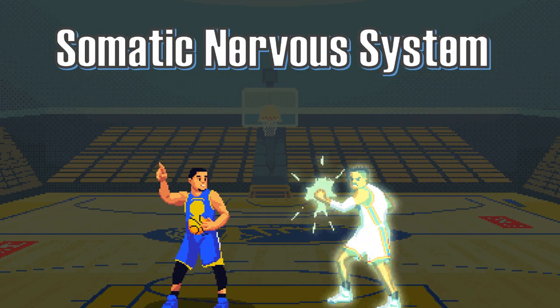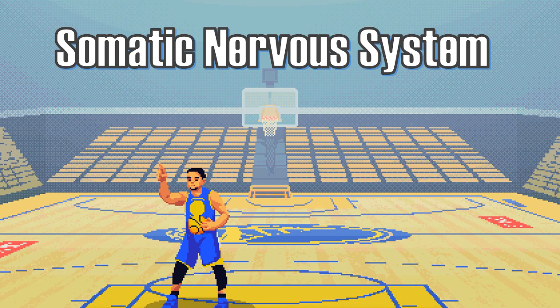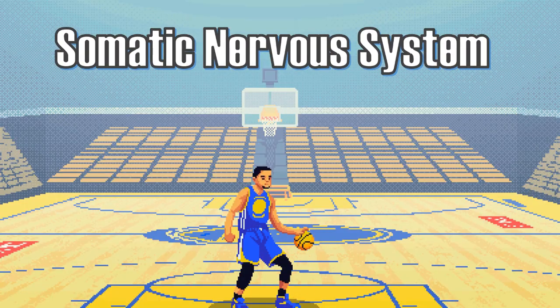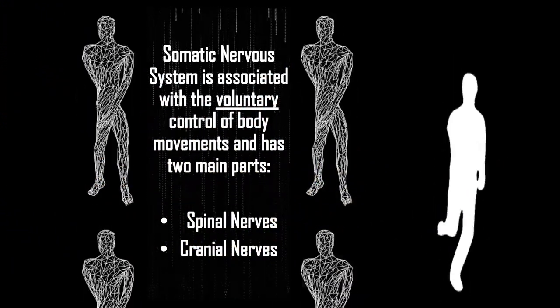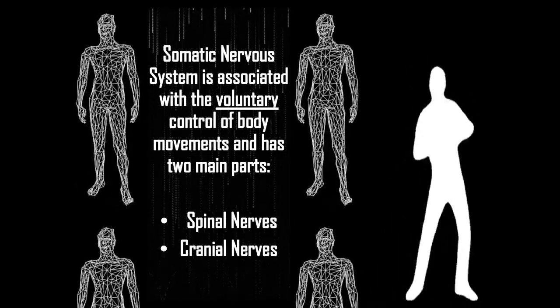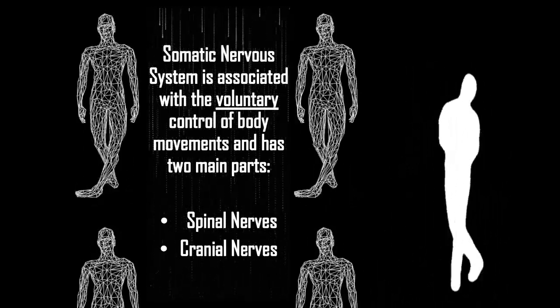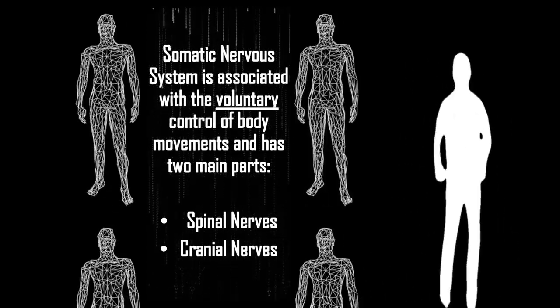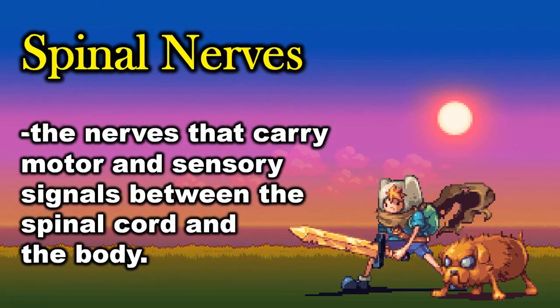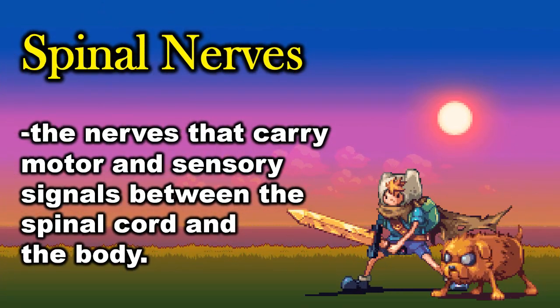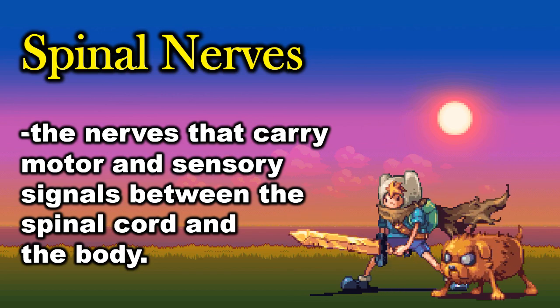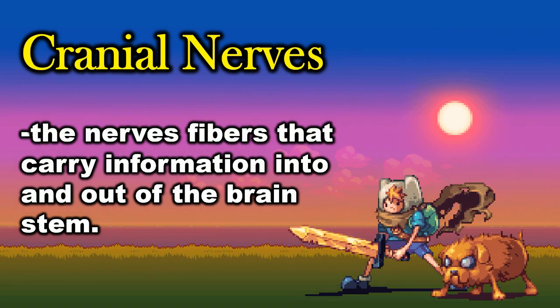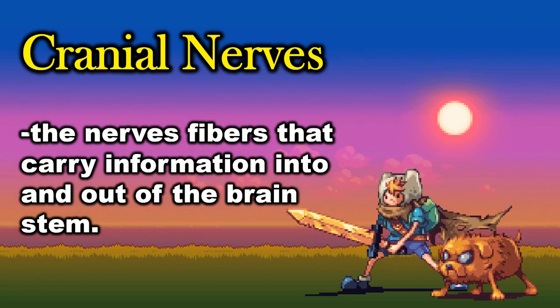The somatic nervous system is associated with the voluntary control of body movements and has two main parts: spinal nerves and cranial nerves. Spinal nerves carry motor and sensory signals between the spinal cord and the body. Cranial nerves are nerve fibers that carry information into and out of the brainstem.